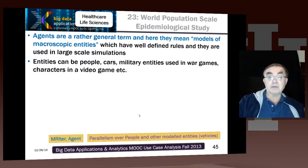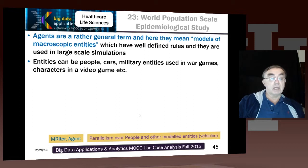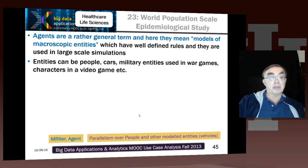Agent-based simulation is very well-known from how the military models war games, and it's also effectively how video games are constructed — with monsters, heroes, and rules about what happens when a hero uses a gun while a monster is running at a certain distance. These are all time evolutions carried out according to rules, which is what agent-based simulation is.